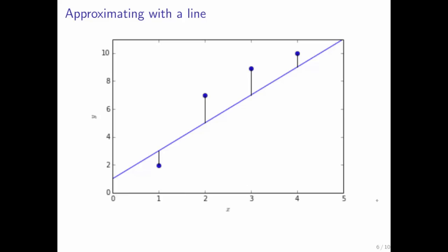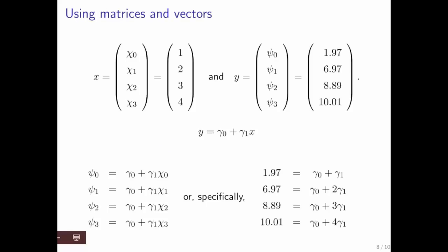So what does it mean to come up with the best line? And this is where linear least squares comes in. So how can we set that up with matrices and vectors? We know that the line that we are after has two coefficients, the slope and the y-intercept. So we would like to determine these two coefficients.